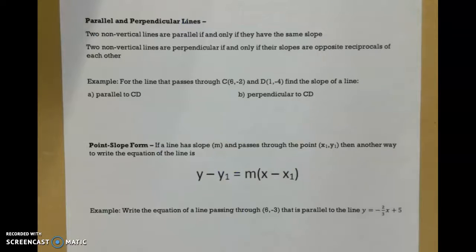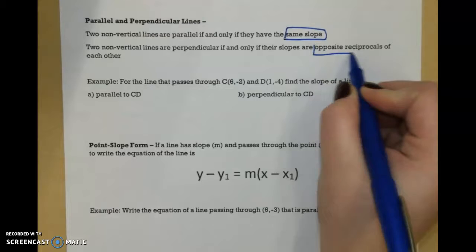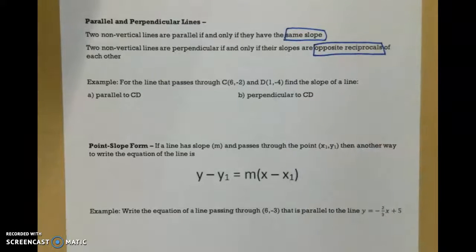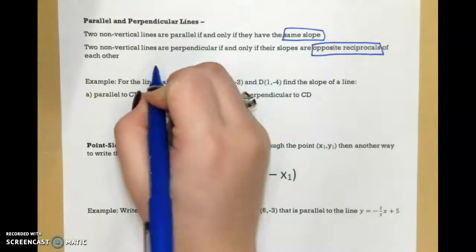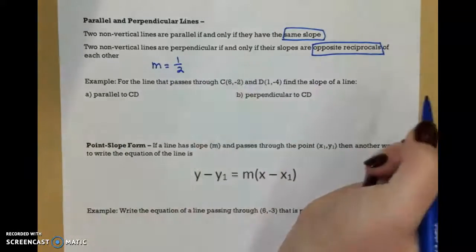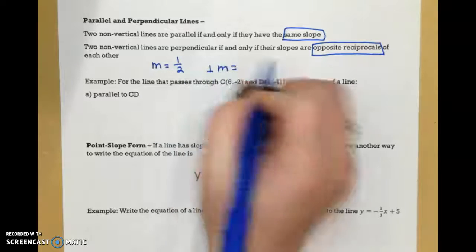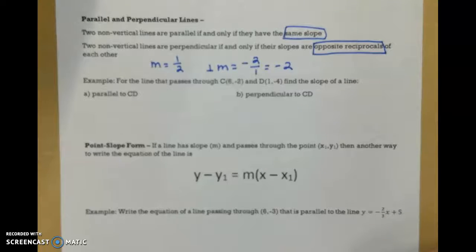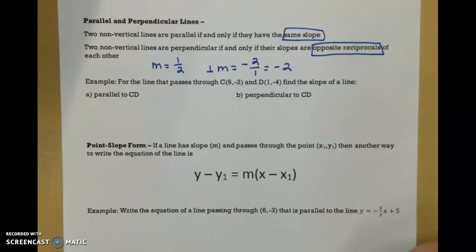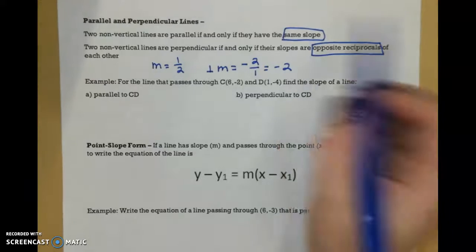Moving on to our next page, we are going to talk about parallel and perpendicular lines. The first thing about parallel lines is that they have the same slope. And perpendicular lines have opposite reciprocal slopes, which means I flip my fraction upside down and I change the sign. So if my slope was 1 half, then my perpendicular slope would be negative 2.